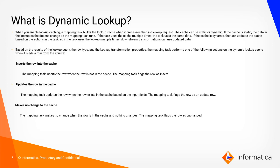When you enable lookup caching, a mapping task builds the lookup cache when it processes the first lookup request. The cache can be static or dynamic. If static, the data in the cache doesn't change as the mapping task runs. With a dynamic lookup, the task updates the cache based on actions in the task, so downstream transformations can use updated data.